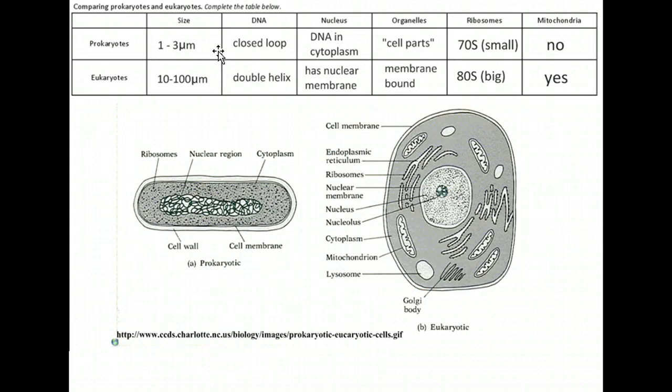Prokaryotes are about 1 to 3 micrometers in diameter, whereas eukaryotes are 10 to 100 micrometers in diameter — so eukaryotes are much larger than prokaryotes, and the two drawings at the bottom are not to scale. The DNA in prokaryotes is closed loop or circular DNA, sometimes referred to as a nucleoid, whereas in eukaryotes the DNA is in chromosomes — those X-shaped structures. That DNA is structured in a double helix in distinct segments: those are the chromosomes.